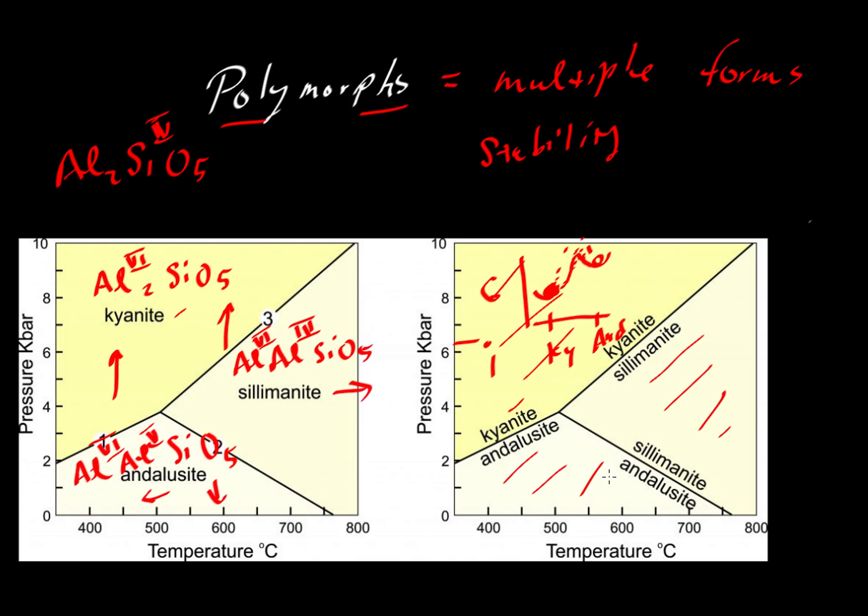So that's it for polymorphs. These are crystals or minerals that have multiple forms, and the multiple forms we see in nature are controlled by the Gibbs free energy - what is stable - and they'll be differentiated based on their structure.